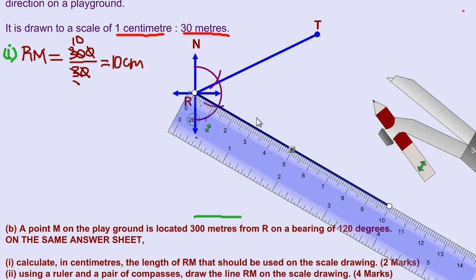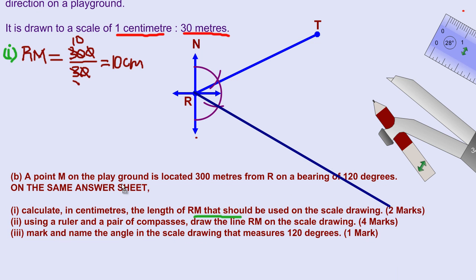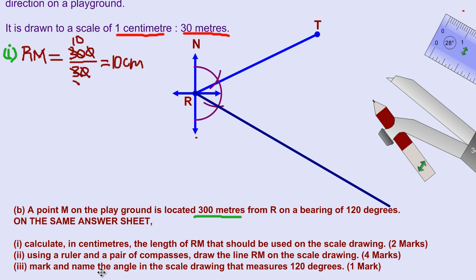For part three, they're asking us to mark and name the angle in the scale drawing that measures 120 degrees. So obviously this angle here guys, let me just mark it quickly. I'm just going to use this yellow line and mark that it is this angle that I'm speaking about. All of this angle here is really 120 degrees. Remember the angle starts from the north line and it ends right there. This is the angle, all of this angle measures 120 degrees.